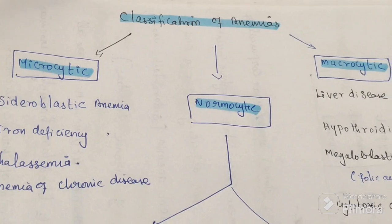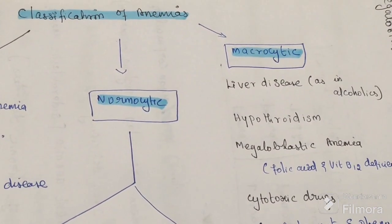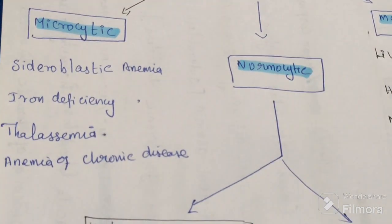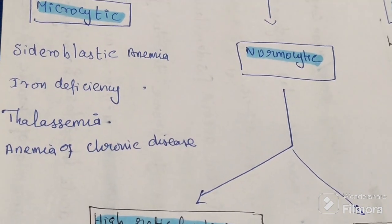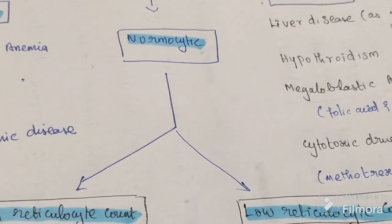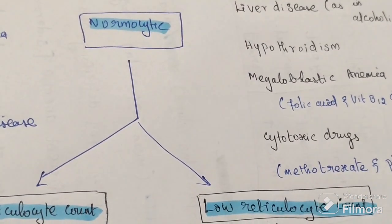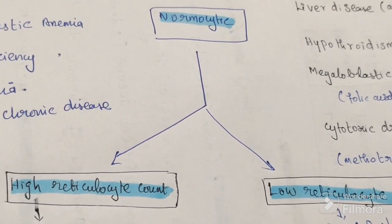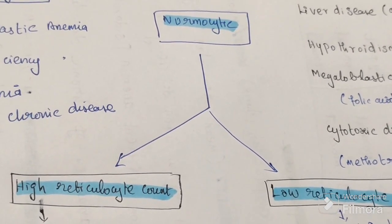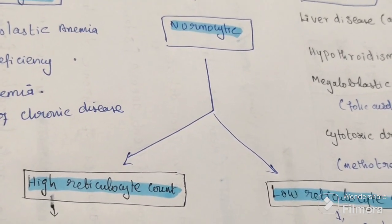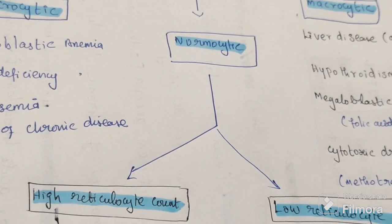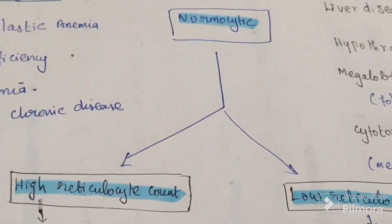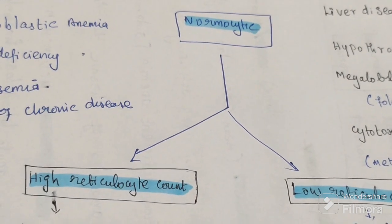So the classification of anemia includes microcytic, normocytic, and macrocytic anemias. Under microcytic anemia, examples include sideroblastic anemia, iron deficiency anemia, thalassemia, and anemia of chronic diseases. For normocytic anemia, it can be further classified by reticulocyte count, which is important diagnostically as it reflects the amount of effective RBC production taking place in the bone marrow.